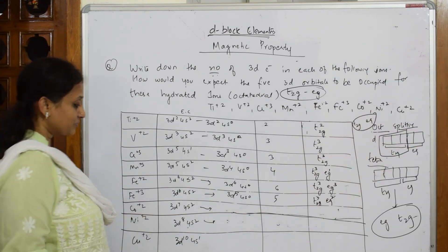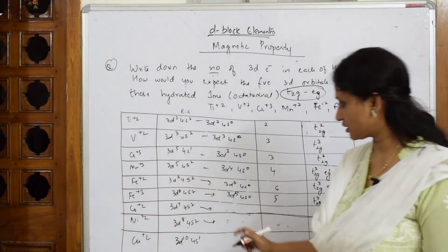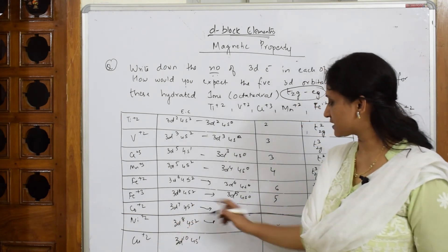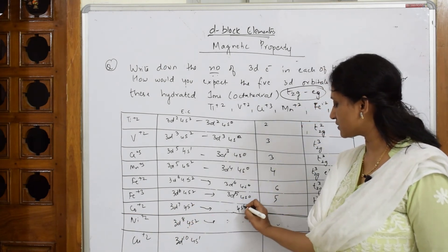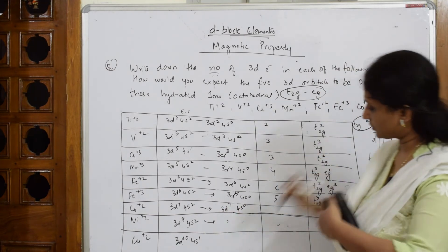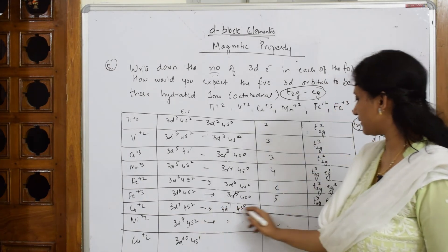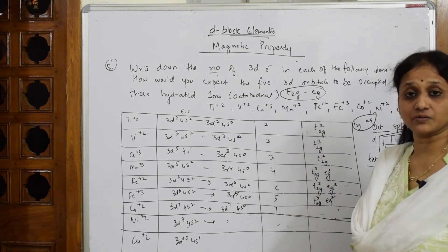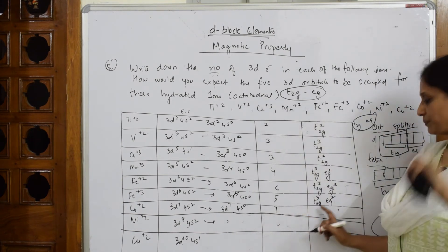So let us write for cobalt now. Cobalt. When I have to take cobalt, how many? 2 isn't it? This becomes 4S⁰. 3D⁷. Now, how many unpaired electrons do we have? We have 7 unpaired electrons.